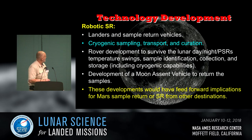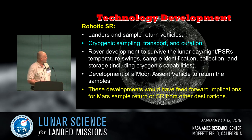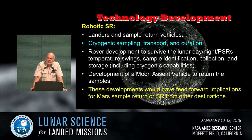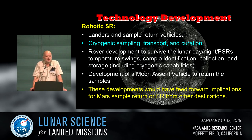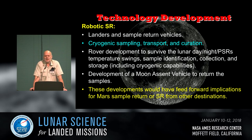In terms of sample return, there are some technology developments. Volatiles has come up time and again — cryogenic sampling, transport, and curation is going to be a grand challenge in terms of bringing back ices, whether from permanently shadowed craters on the Moon, from an ocean world, or from a comet. We can learn how to do this on the Moon because it's close and we know where it's going to be. We can test our technologies on the Moon to then undertake more risky missions further afield. The Moon becomes our enabling testbed.